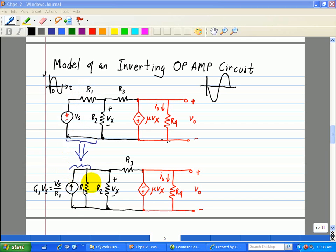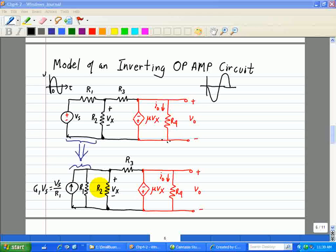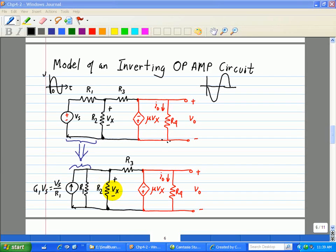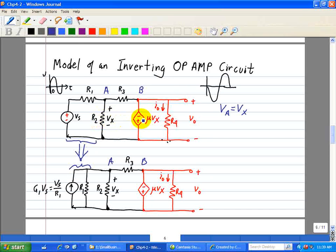Here we note now that R1 and R2 is in parallel. Now, the control voltage Vx is equal to Va, in which we denote this as a node A here and here, and a node B here and here.